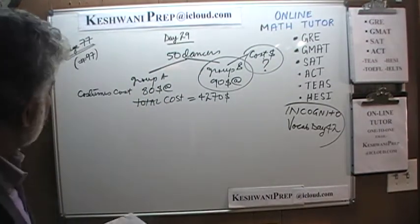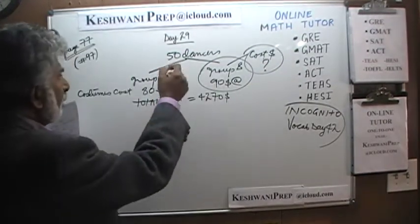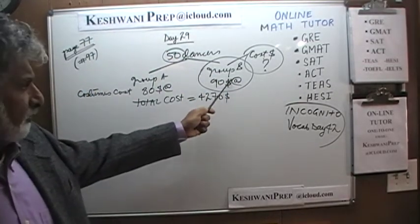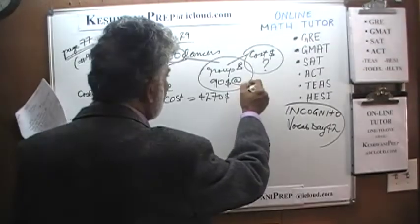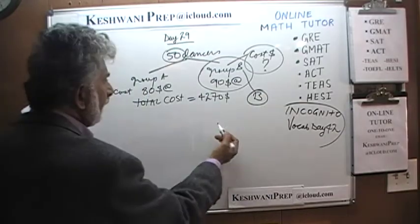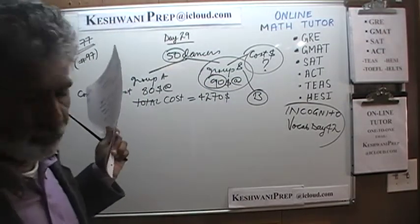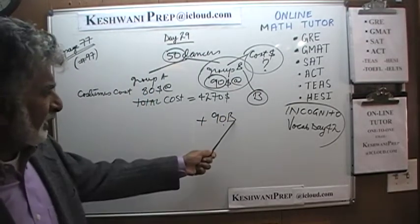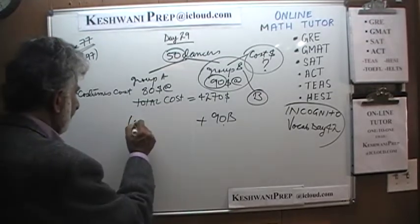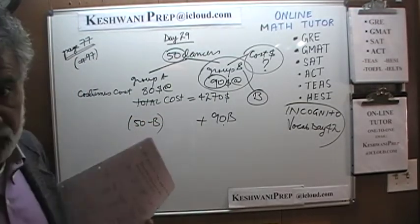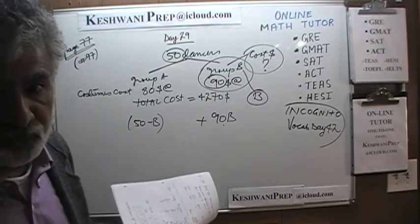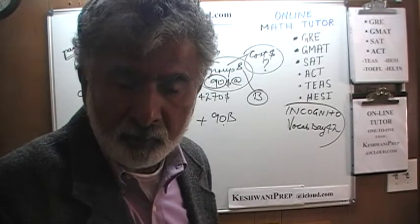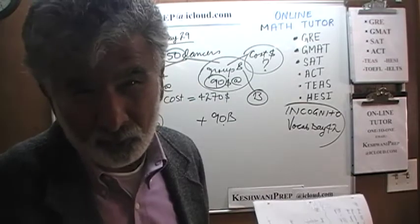Let's set it up. We have 50 people altogether, and since we are interested in group B, let's solve for B. Let's call the number of people in group B simply B. So we have 90 times B. And once we take away B number of people from the 50, what we are left with is 50 minus B. The reason we are solving for B is because we are interested in how much the costume cost for group B. If we solve for A, we would have to remember to subtract that answer from 50, and if we forget, we are done.